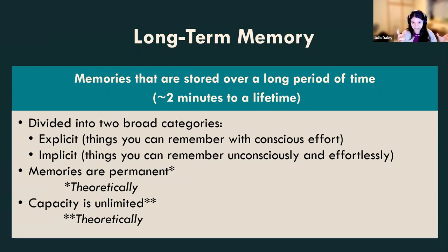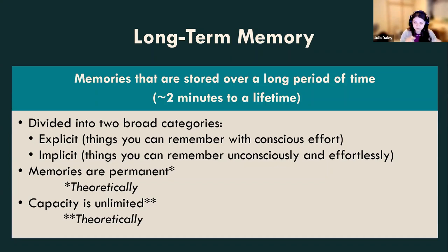Long-term memory is divided into two broad categories. Explicit memories are things you can remember with a conscious effort — remembering when the United States became an independent country, remembering trivia, stories that happened to you in your life. Anything that you can really articulate and visualize in your head and talk about are explicit memories.